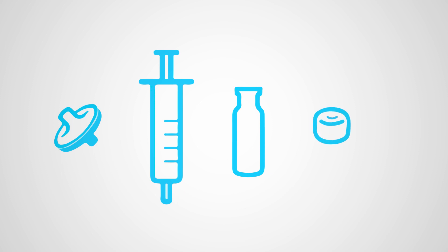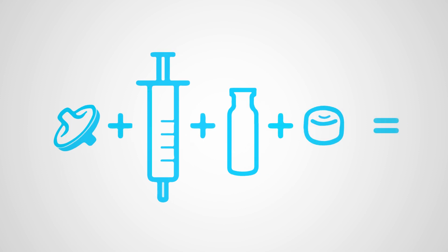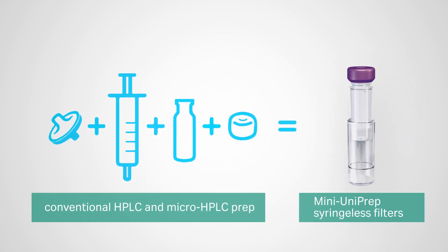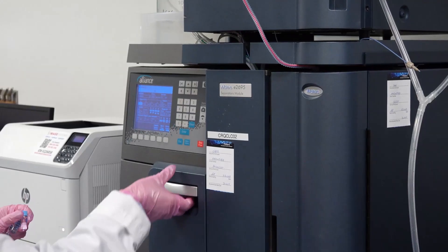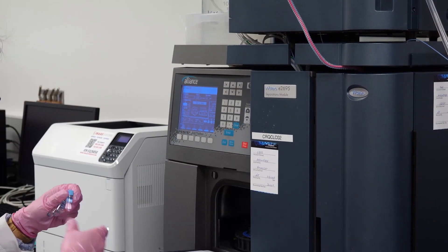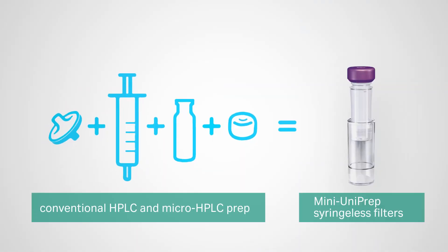syringe, vial, and cap, and the WhatMan Mini-Uniprep syringeless filters from Cytiva. Both methods will produce your final filtered product ready for your autosampler. Let's focus on what's the difference between these two methods.